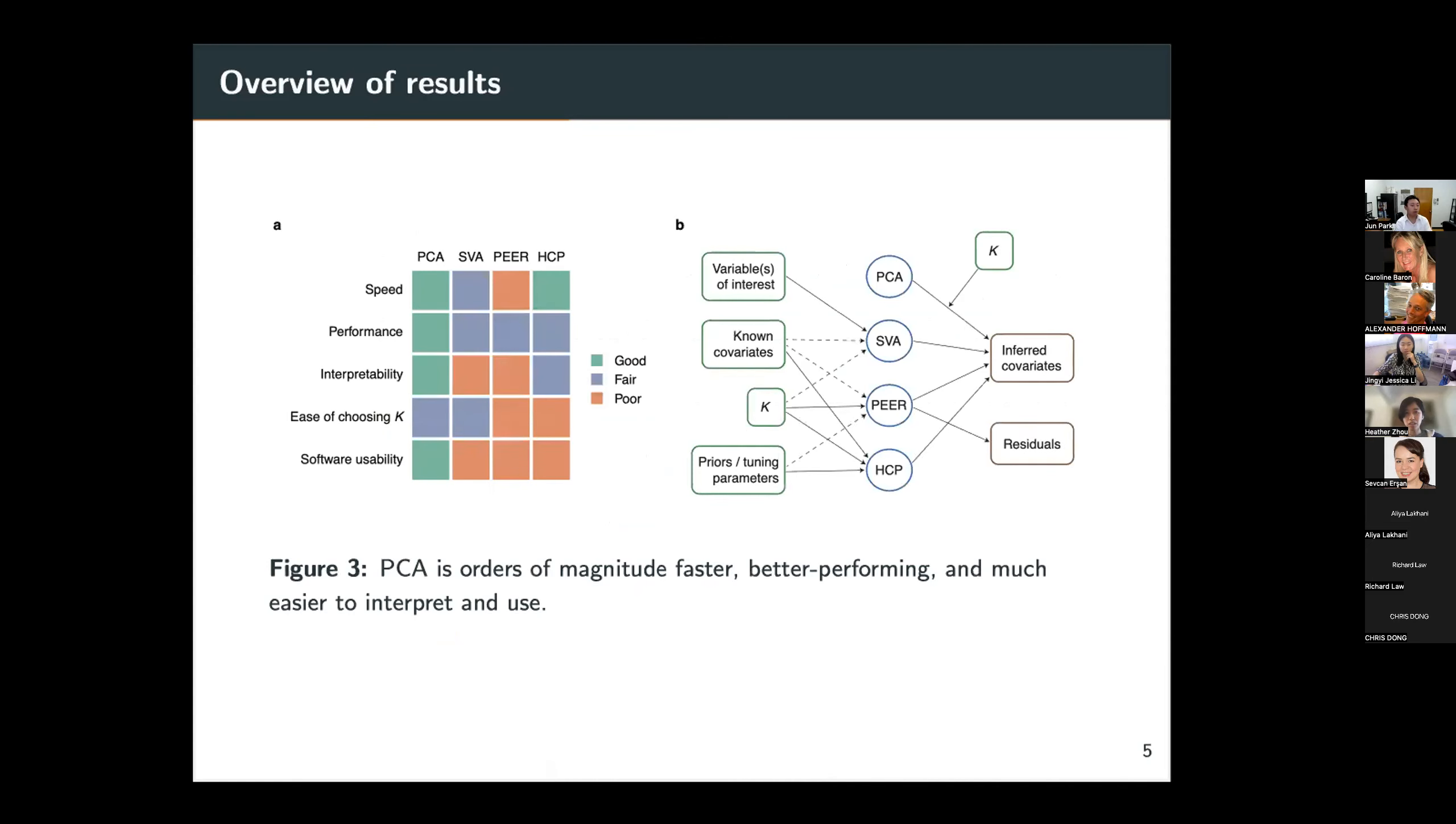So our results, in summary, finds that we found that PCA is orders of magnitude faster, better performing under simulation settings, and much easier to interpret and use. It is faster and better performing under simulation settings and also under real data sets. It's much more interpretable, and in terms of the ease of choosing the number of inferred covariates and software usability, we found PCA was easier to use.